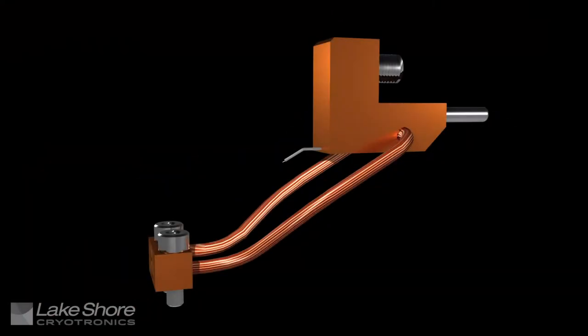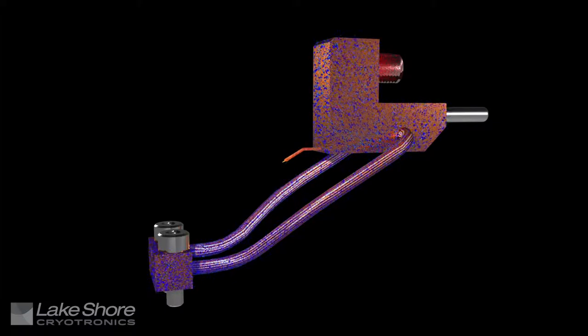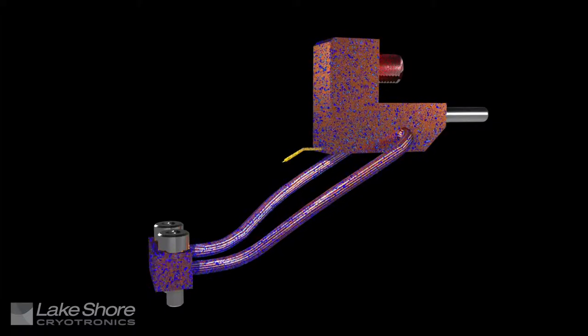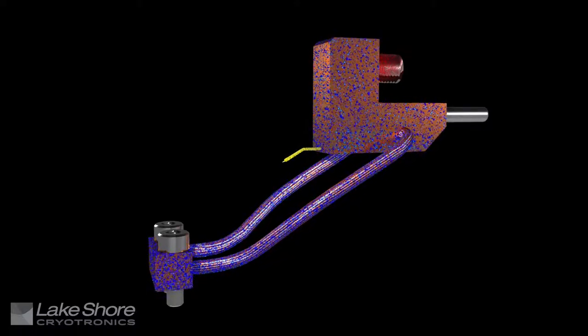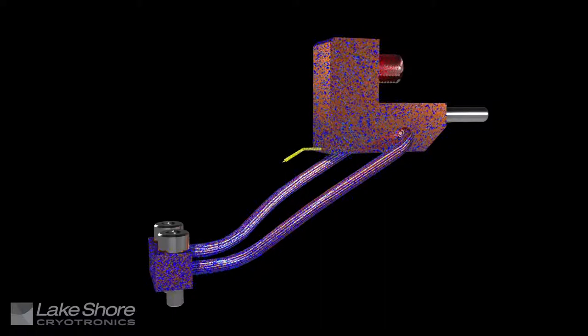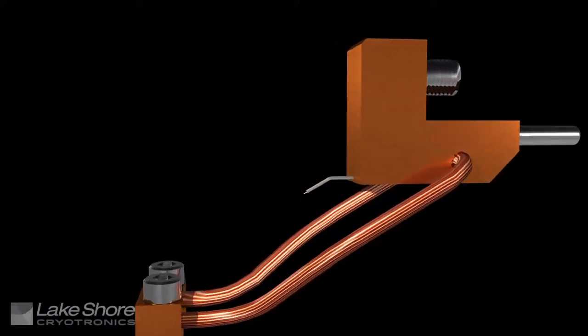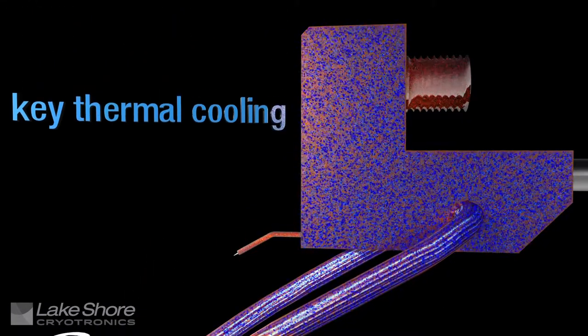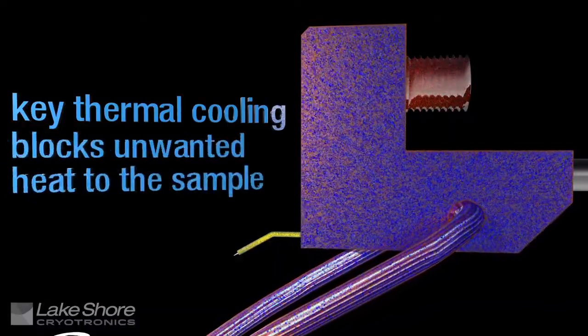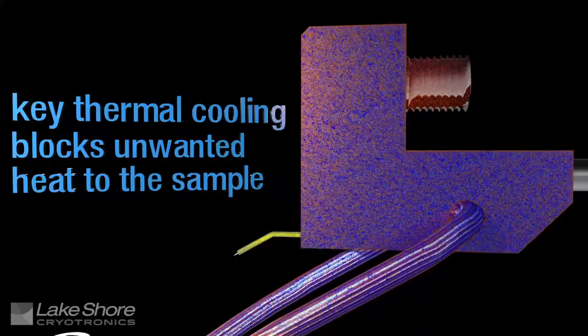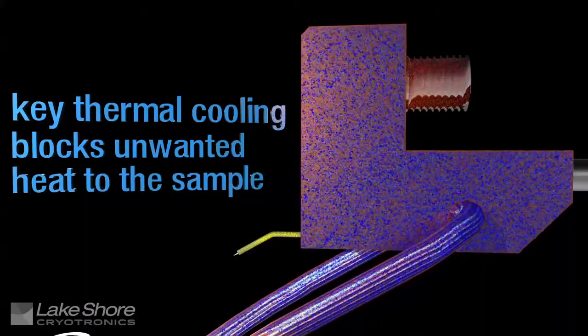This process will be performed on a Lakeshore GSG microwave probe. Lakeshore microwave probes differ from other RF probes in that they have an integrated mount, all-copper body, and a pair of copper braids that are attached to the sample stage via a copper braid block to cool the probe. This design provides key thermal cooling of the probe tip and blocks unwanted heat to the sample, and Lakeshore microwave probes are routinely cooled below 10 Kelvin in a CRX 4K probe station.